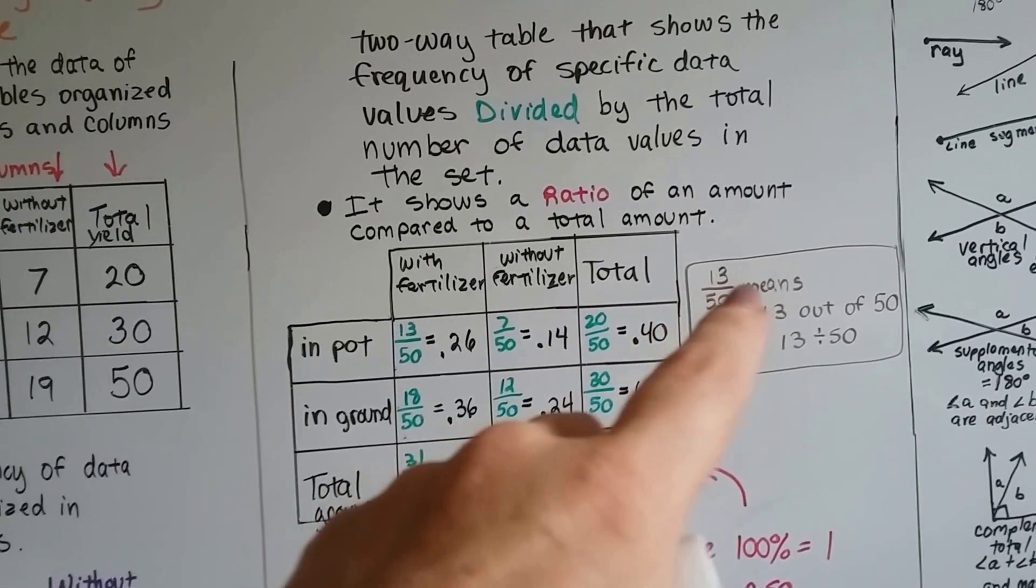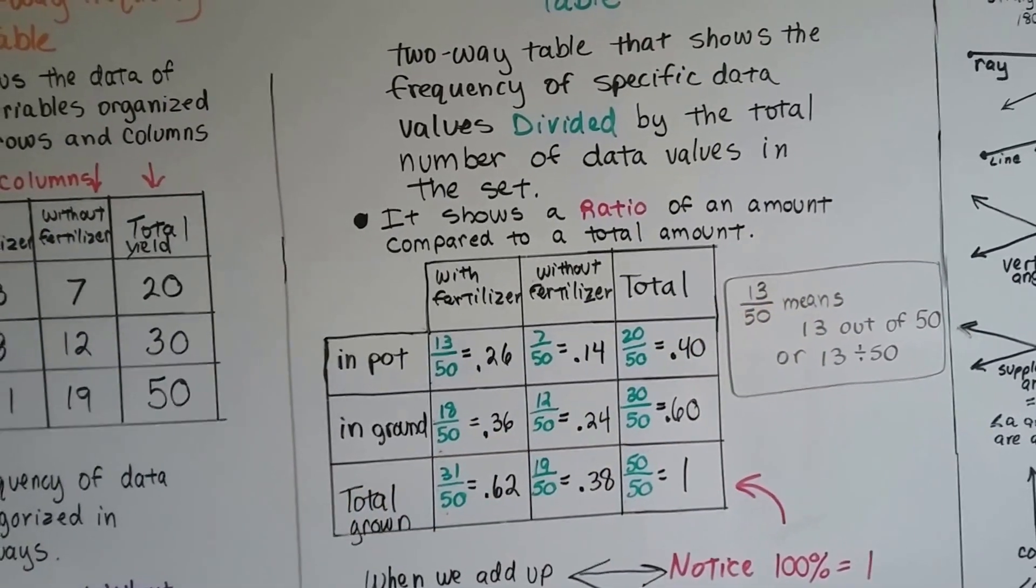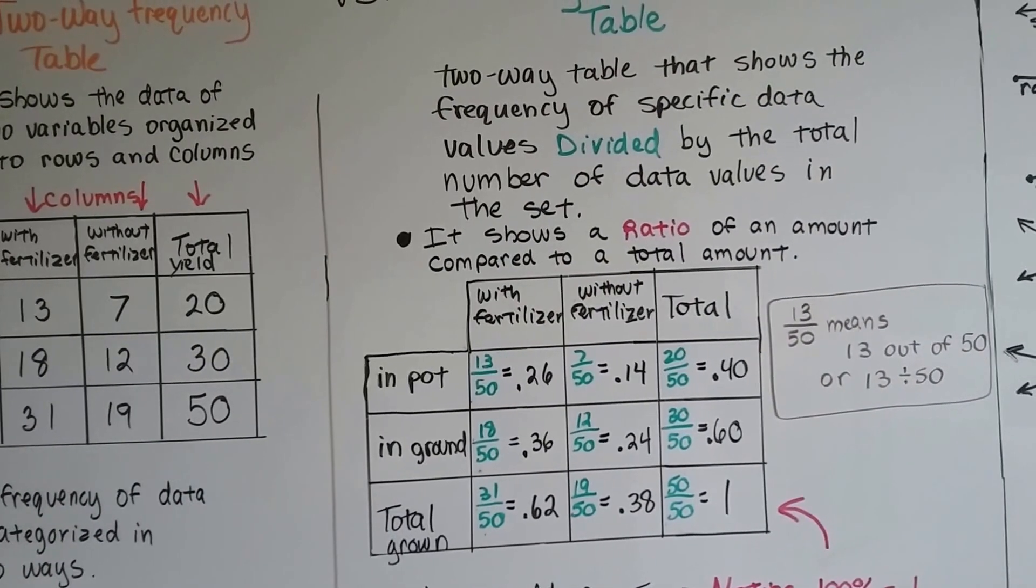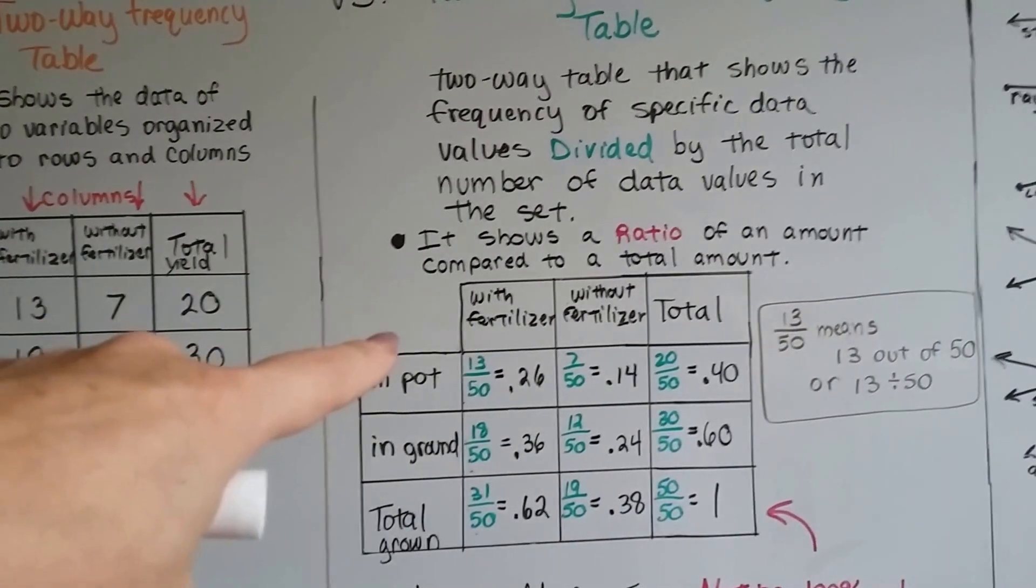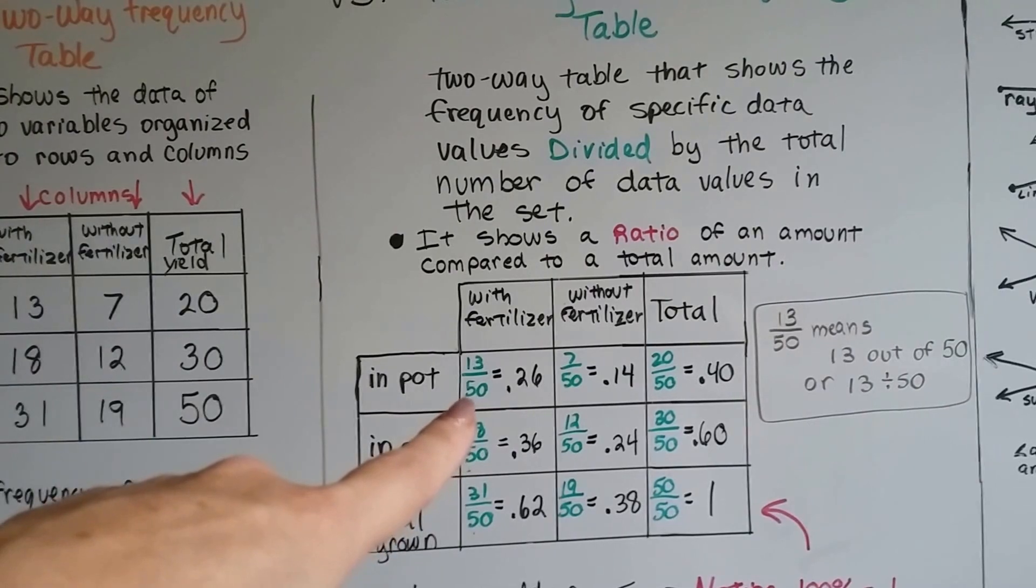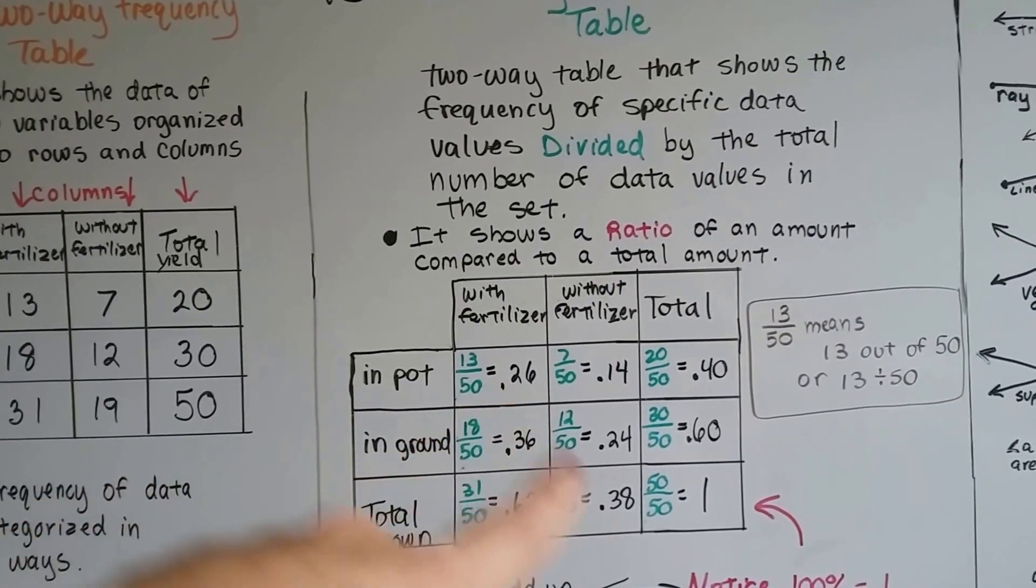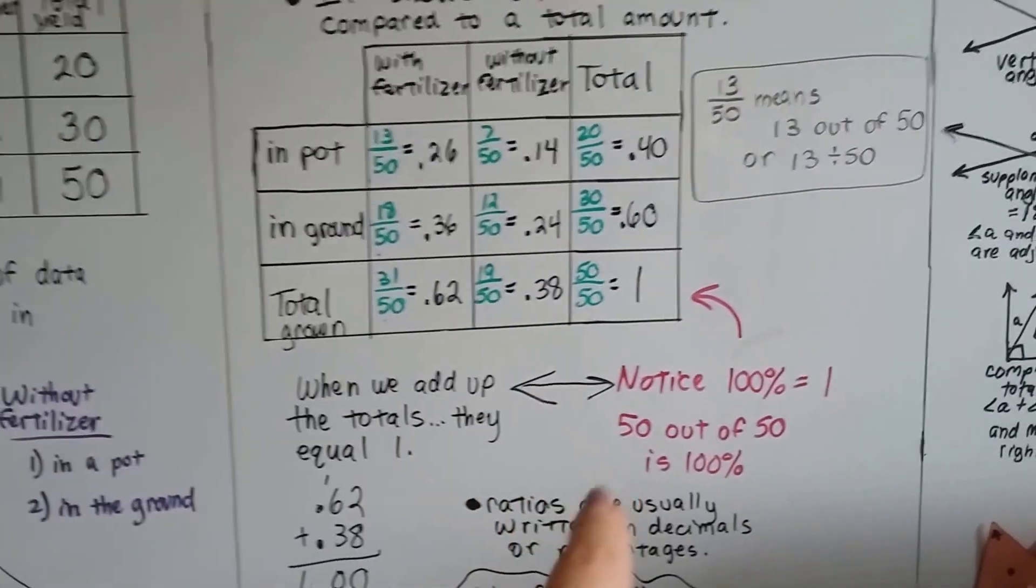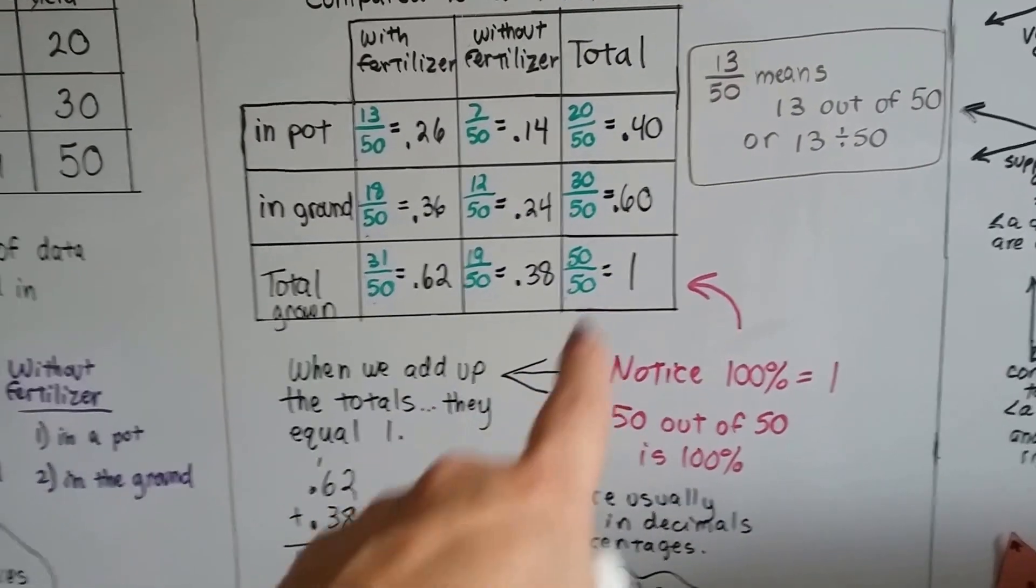This fraction bar right here is a division sign. So this shows a ratio of the amount compared to a total amount. 13 were grown with fertilizer in a flower pot. That's 0.26 out of the 50. See? And you notice that 100% is 1.